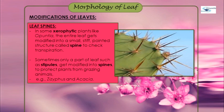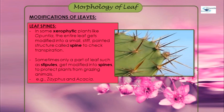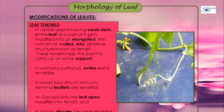Now, modification of leaves. Leaves can be modified into leaf spines. In some xerophytic plants — plants grown in dry and arid climates or desert regions — like Opuntia, the entire leaf gets modified into a spine-like, stiff pointed structure to check transpiration, that is, to reduce water loss. Sometimes only a part of the leaf, such as stipules, gets modified into spines to protect plants from grazing animals, as seen in Ziziphus or Acacia.